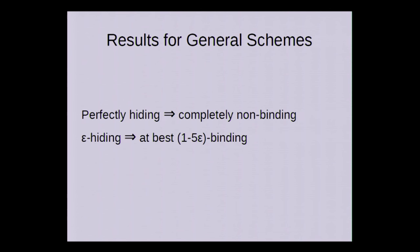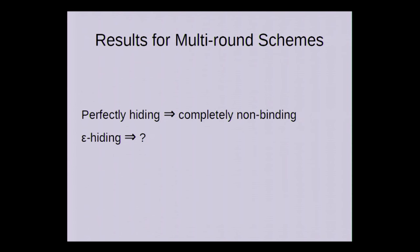And we also have a result for more general schemes where both provers communicate in the commitment phase and in the opening phase, and we still have the result that perfectly hiding schemes are completely non-binding. And also if they are epsilon hiding they can at best be 1 minus 5 epsilon binding so we have some loss there. We can go even further and look at multi-round schemes where the commitment phase takes multiple rounds of communication. We still have the same result for the perfectly hiding case but we couldn't find anything for epsilon hiding.